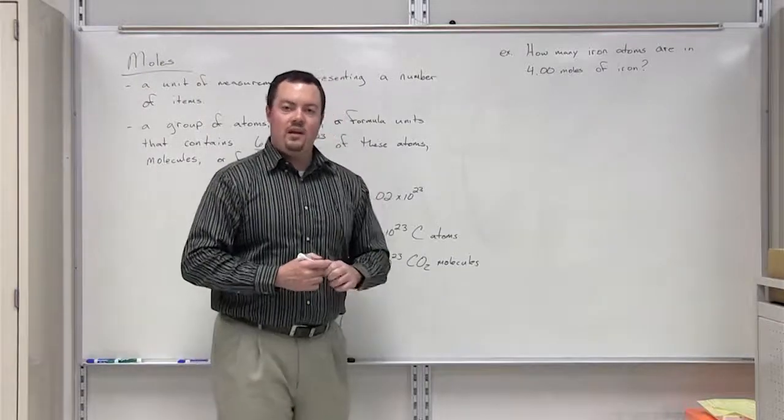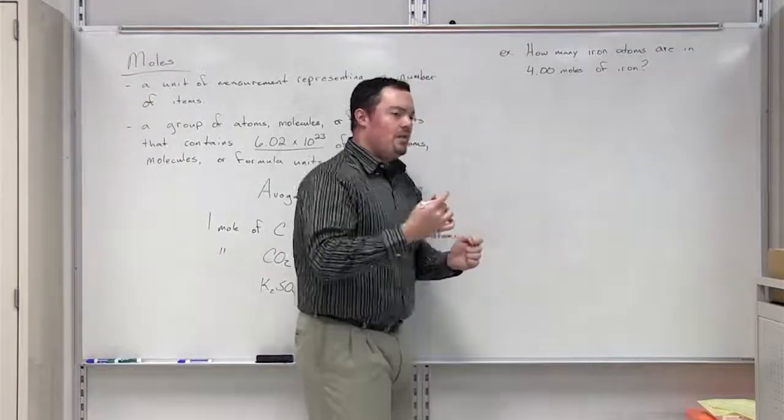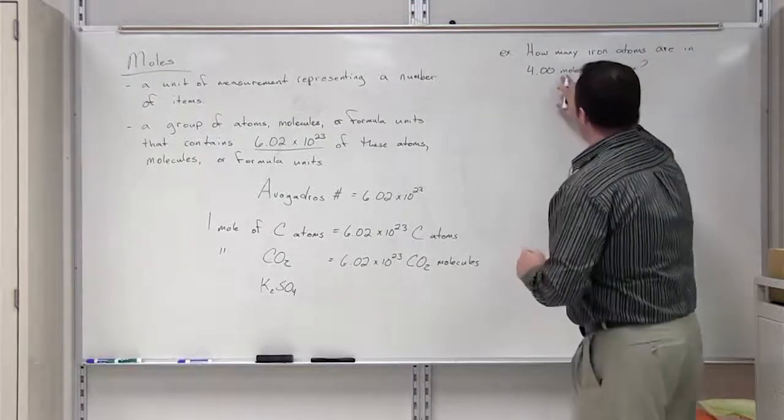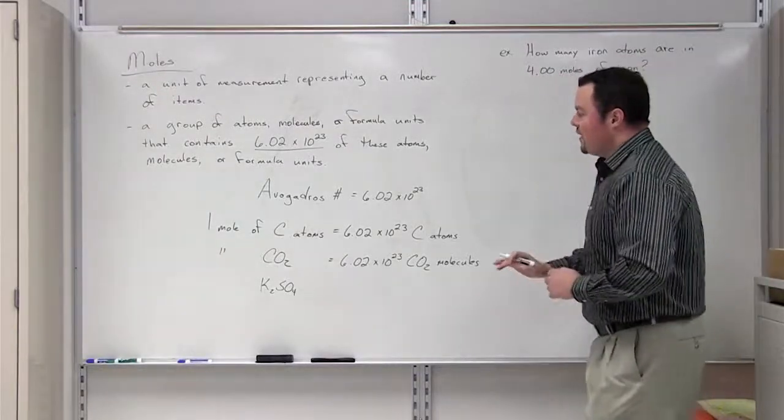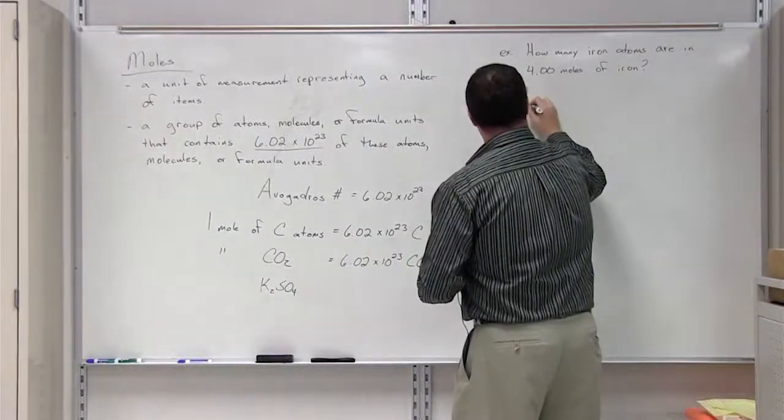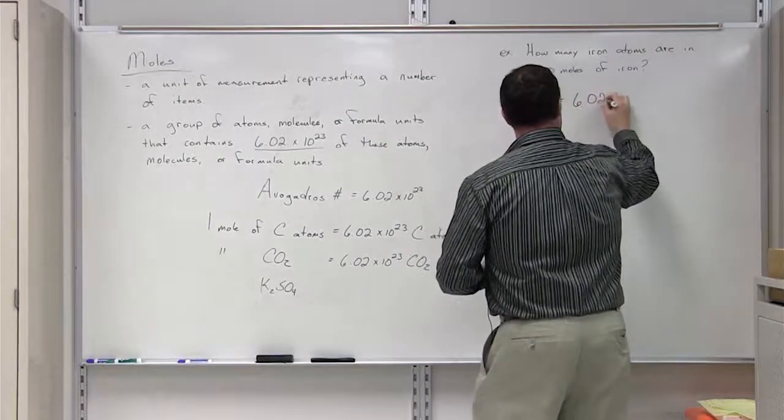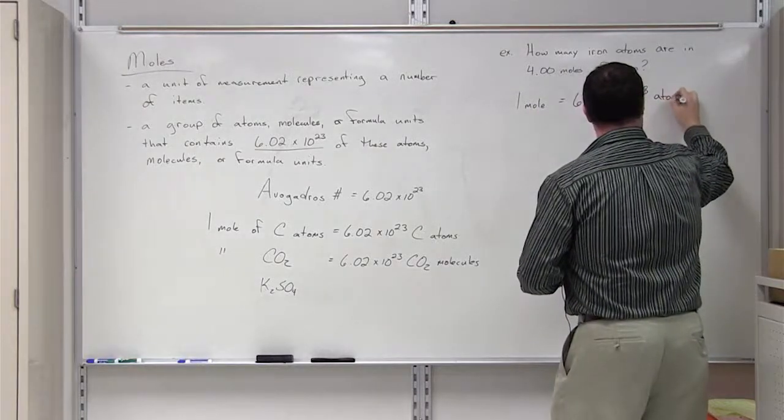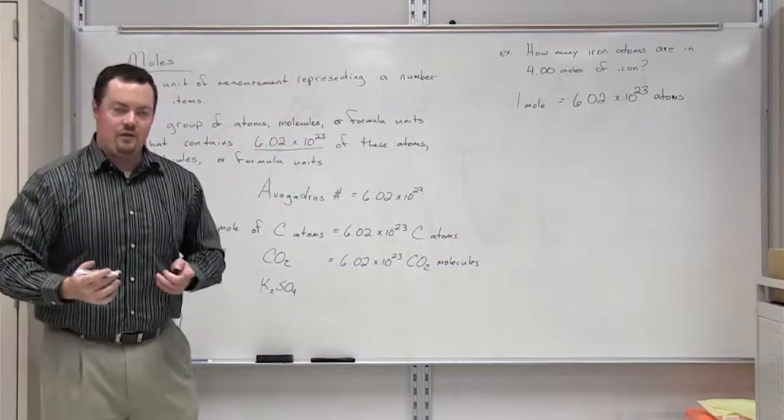Any time we are presented with a conversion problem, you're always going to start out with determining an equality which relates your unit that you're given to the unit that you want. It turns out we have that equality. One mole is equal to 6.02 times 10 to the 23rd atoms. This is an equality, stating two equal values.